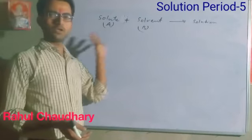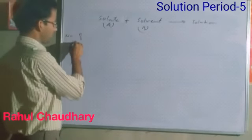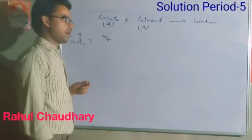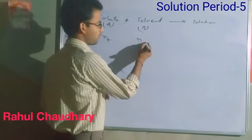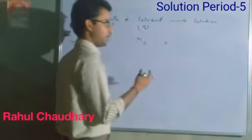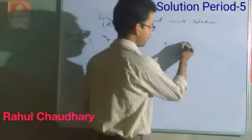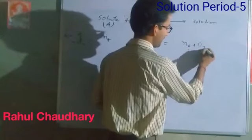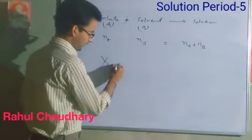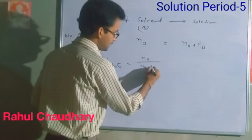Some moles of solute are dissolved. Number of moles of solute is Na. That is dissolved in number of moles of solvent B, which is Nb. So moles of solution equals moles of solute plus moles of solvent, that is Na plus Nb. So mole fraction of solute is equal to Na divided by Na plus Nb.